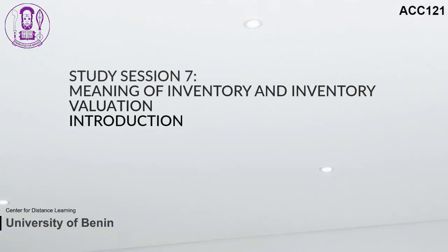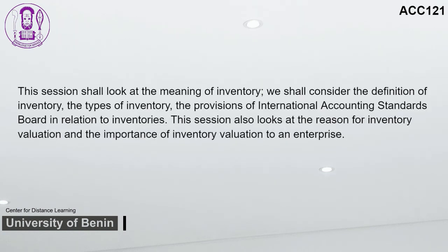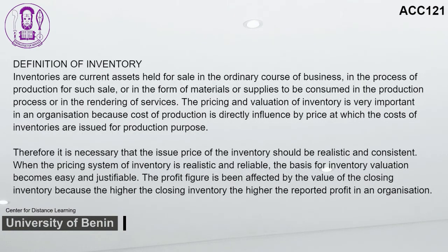Study Session 7: Meaning of Inventory and Inventory Valuation. This session looks at the definition of inventory, types of inventory, and the provisions of the International Accounting Standards Board in relation to inventories. Inventories are current assets held for sale in the ordinary course of business, in the process of production for such sale, or in the form of materials or supplies to be consumed in the production process or in the rendering of services. The pricing and valuation of inventory is very important as the cost of production is directly influenced by the price at which inventories are issued. The profit figure is affected by the value of closing inventory — the higher the closing inventory, the higher the reported profit.